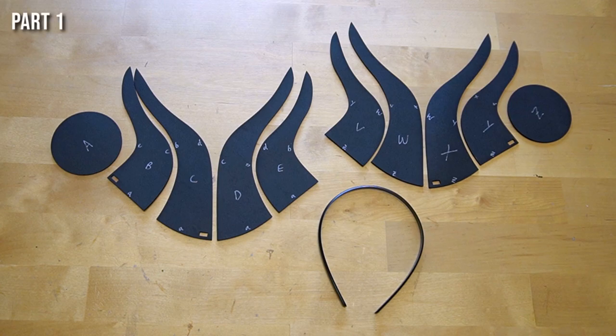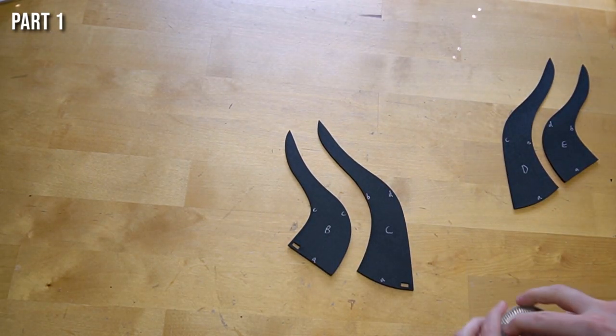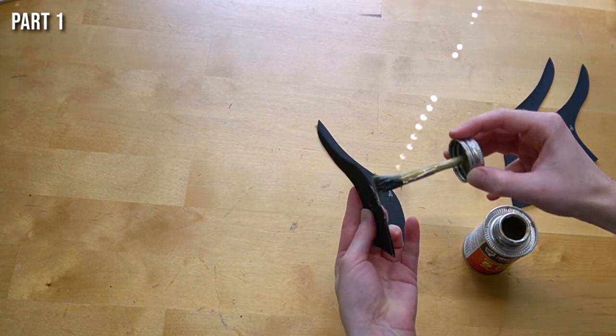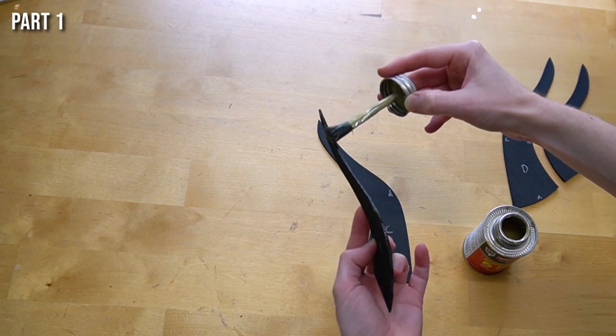To first start off, let's lay out all of the pieces in order, so that way you know which one attaches to which. And we're going to be applying glue to one edge of each of these pieces, onto B and C, the connecting parts, as well as D and E, V and W, and X and Y.